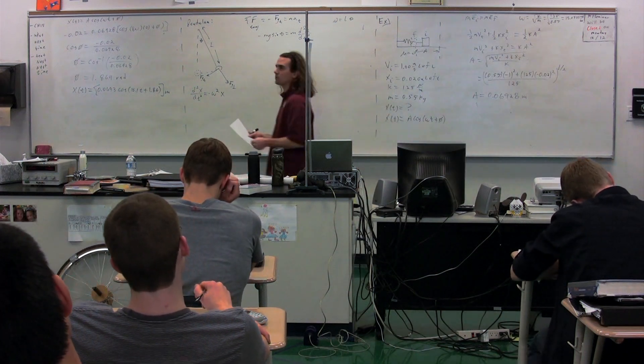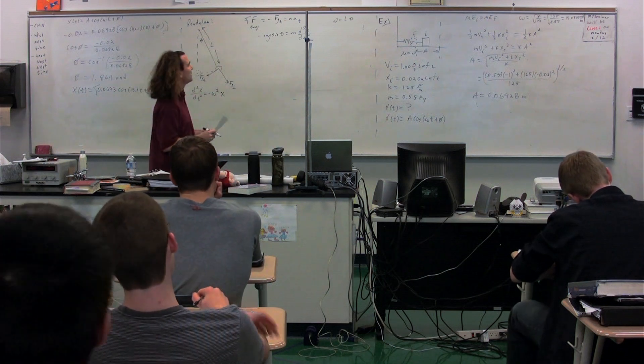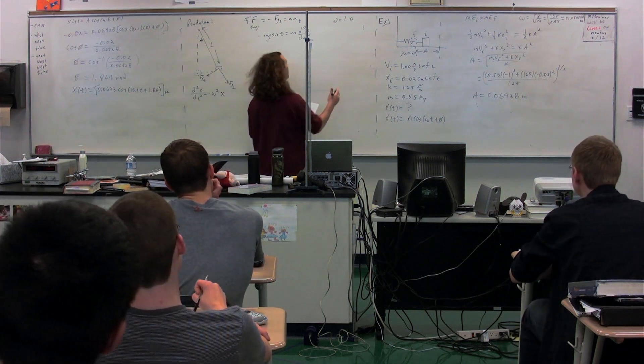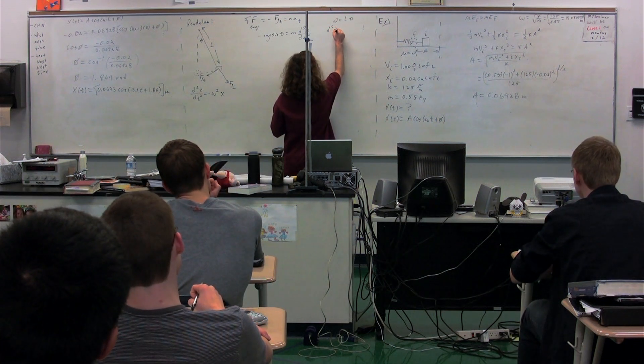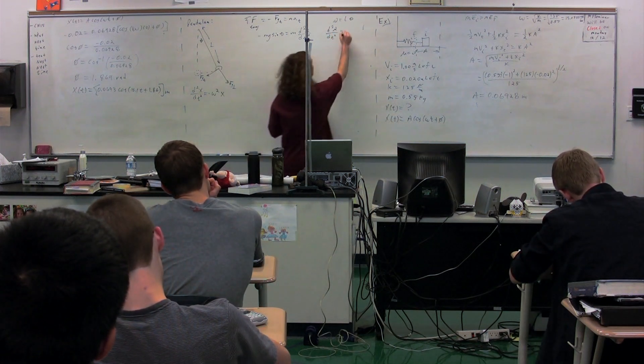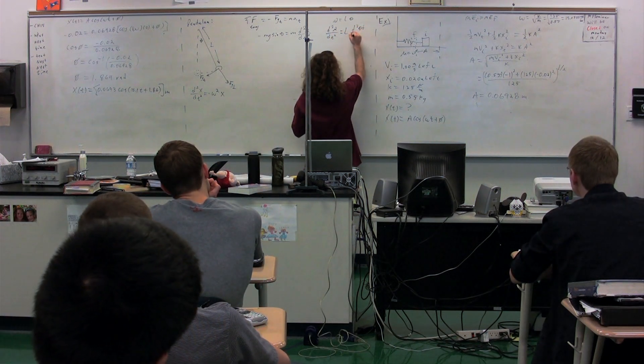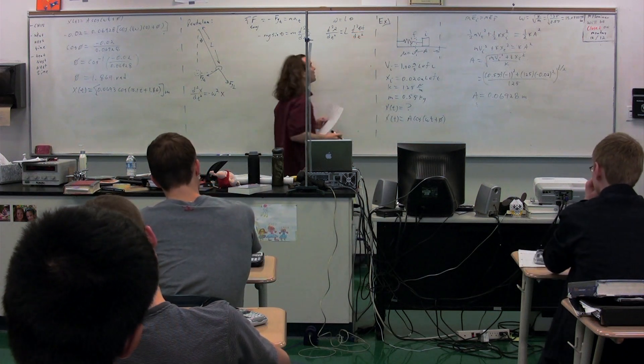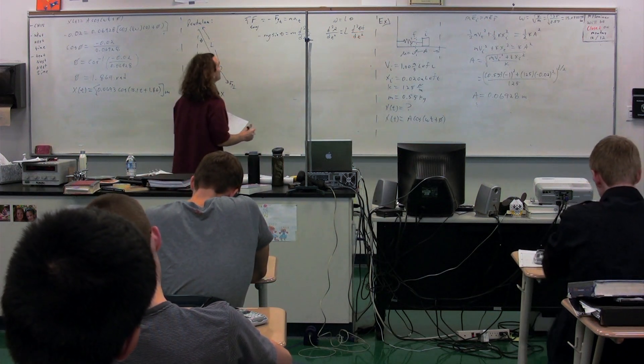So if S, the arc length, equals L, the radius times the angle, if we take the second derivative of this whole equation, we get that the second derivative of the arc length as a function of time is equal to, well, L, the radius, doesn't change, times the second derivative of the angular position as a function of time.